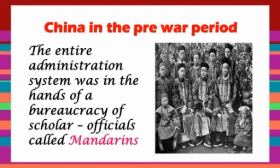China in the pre-war period: Chinese civilization was more advanced than that of Europe, but by the end of the 19th century its progress had halted. The entire administration system was in the hands of a bureaucracy of scholar officials called mandarins. The mass of peasant population was in poverty and suffered from high rent, taxes, and shortage of land. Discontent with the political and economic system resulted in a number of peasant uprisings.